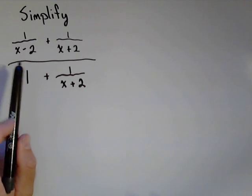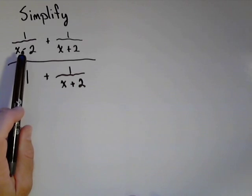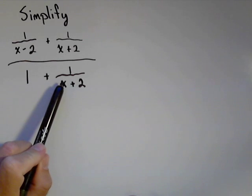So, our goal is to simplify the following rational expression. Notice we have a fraction on top, and we do have a fraction in the bottom.